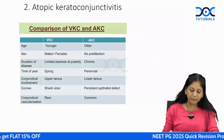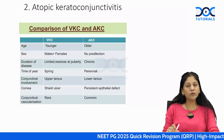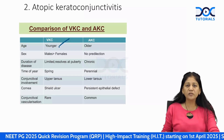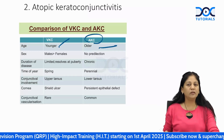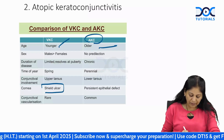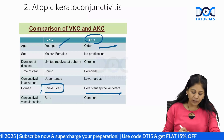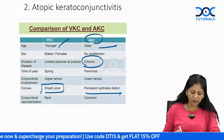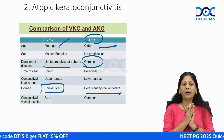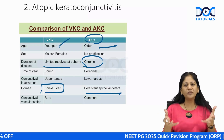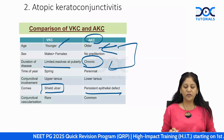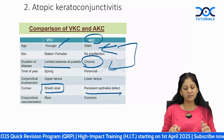Differentiate atopic keratoconjunctivitis (AKC) from VKC: VKC is mostly in small children; AKC is generally in older people. VKC generally starts at 5–7 years of age and resolves by puberty — mostly after 15–16 years we don't see VKC. This history is the main differentiating factor.